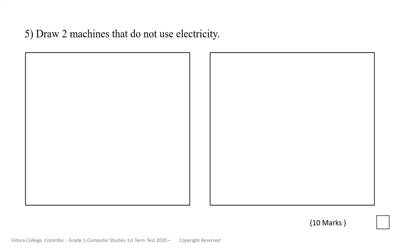Let's go to the last question, question number 5. Draw two machines that do not use electricity. Here you have to draw two machines that do not use electricity.